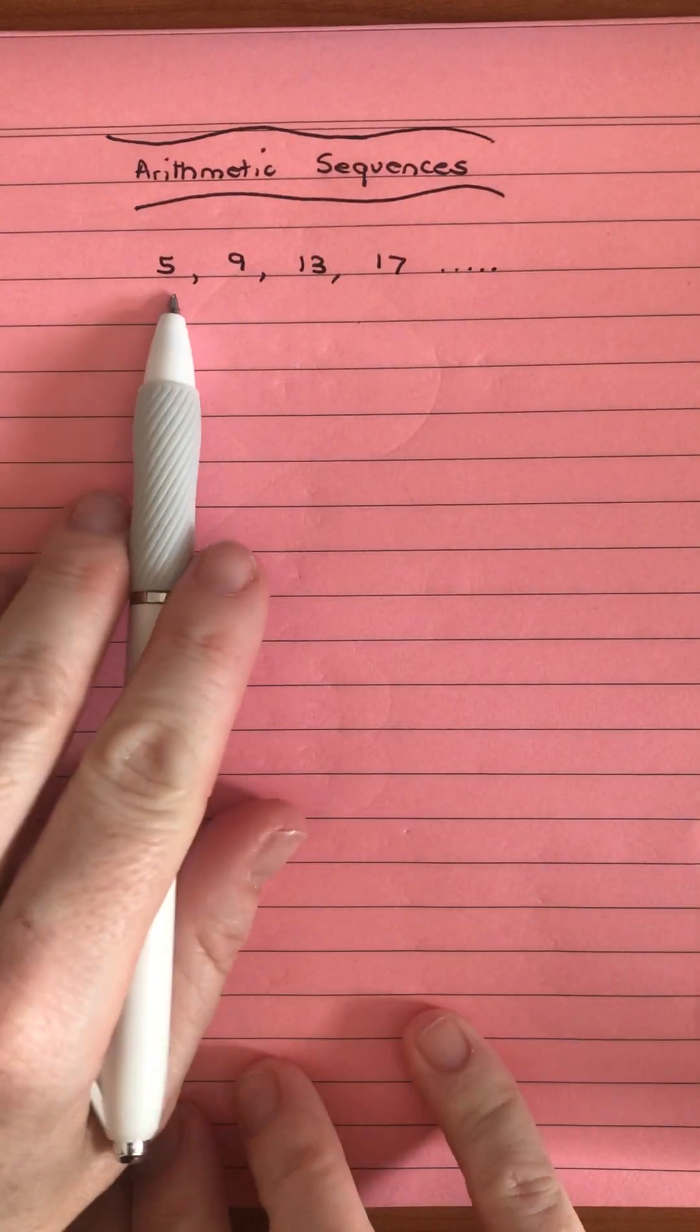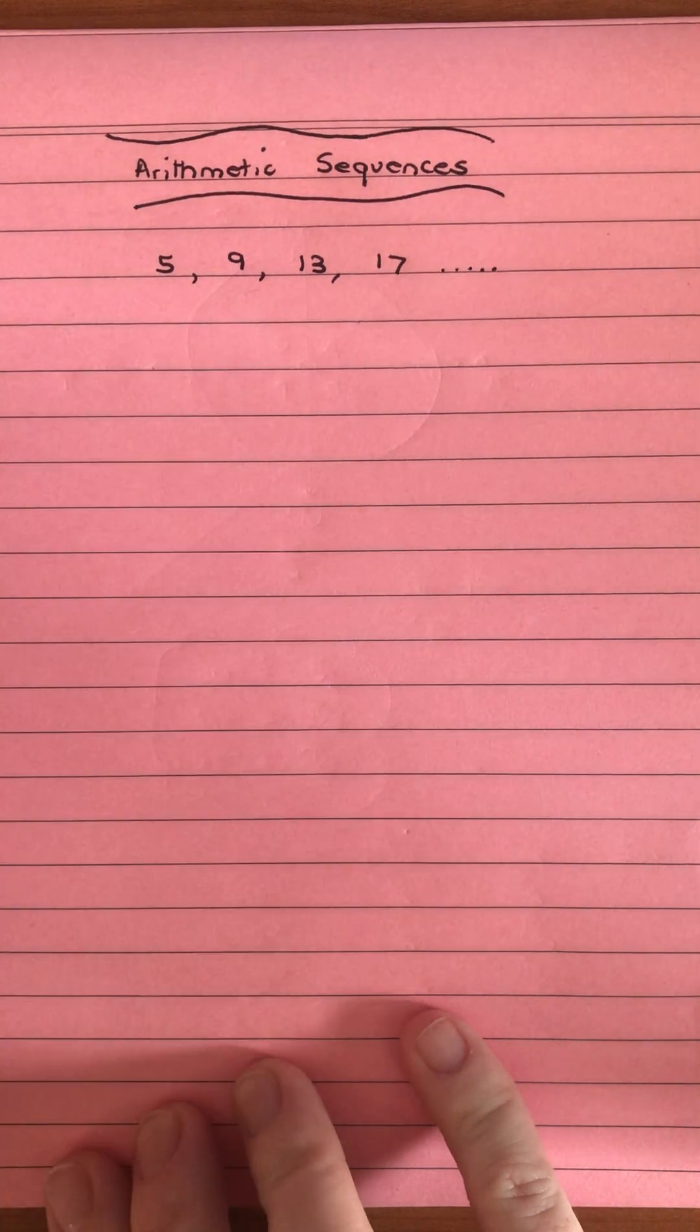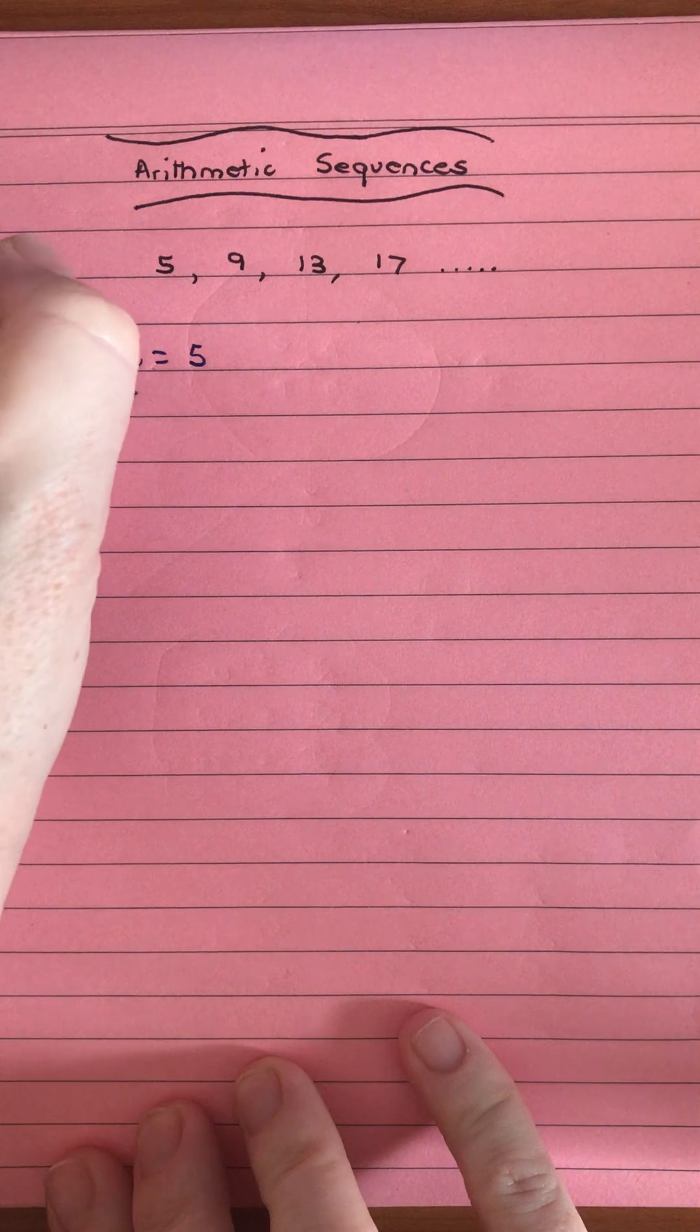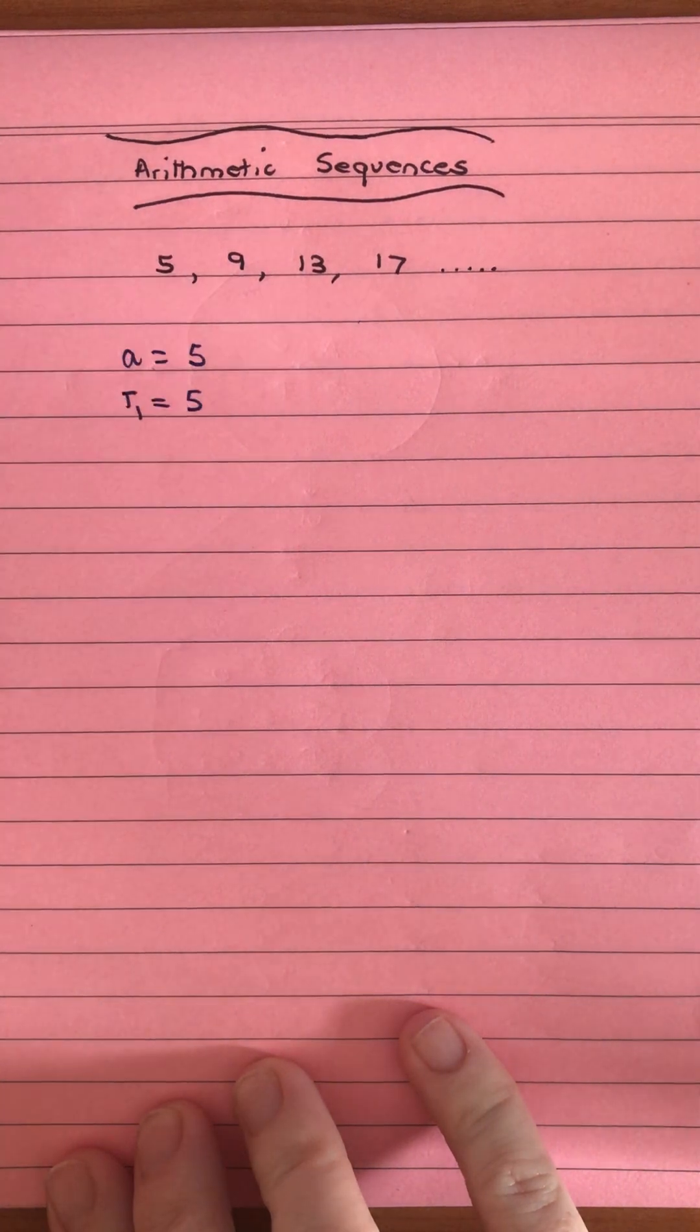When we look at an arithmetic sequence, we can see a starting value. We sometimes call that a, or we sometimes call it T1, the first term.